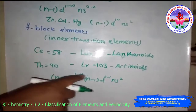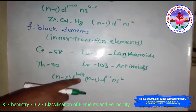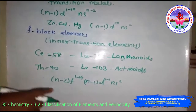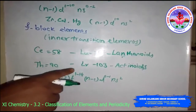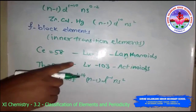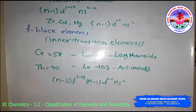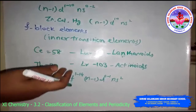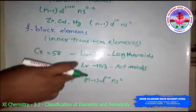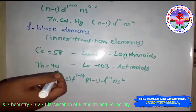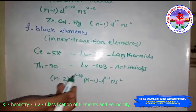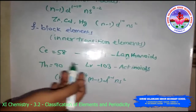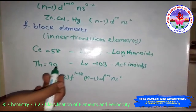The general outer electronic configuration of f-block elements is (n-2)f1-14 (n-1)d0-1 ns2. The last electron added to each element is filled in the f orbital, so these two series are called inner transition elements or f-block elements. All elements in these series are metals, and within each series the properties are quite similar. The chemistry of the early actinoids is more complicated than the corresponding lanthanoids due to the large number of possible oxidation states. Many actinoid elements have been made only in nanogram quantities by nuclear reactions, and their chemistry is not fully studied. Elements after uranium are called trans-uranium elements.